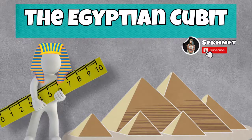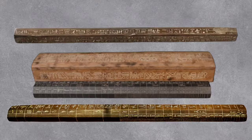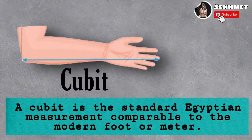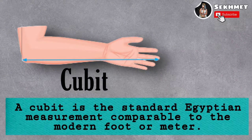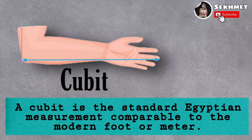Today's video is about the Egyptian cubit, which is one of the earliest known units to measure length. A cubit is the standard Egyptian measurement, comparable to the modern foot or meter.